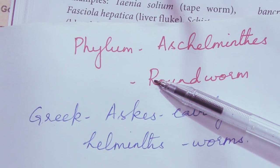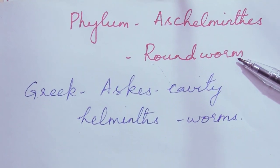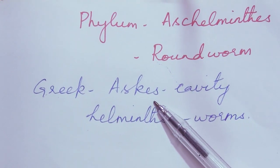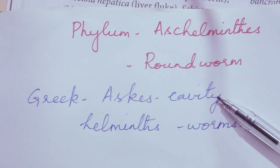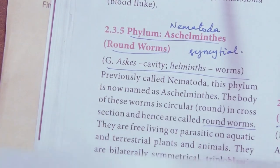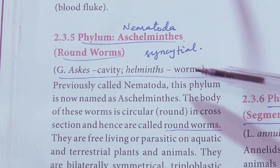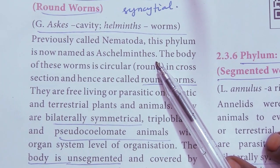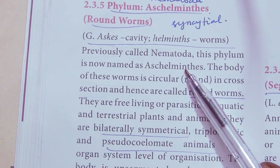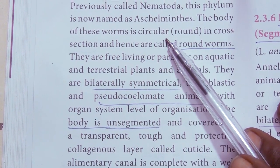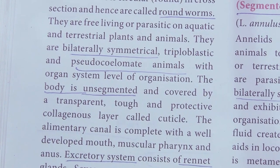Next is Phylum Aschelminthes — another Greek term. Aschelminthes are called roundworms. 'Askos' means cavity and 'helminthes' means worm. So it has a true cavity and is a roundworm. It is also called Nematoda — just as cnidarians were previously called Coelenterata, Aschelminthes were previously called Nematoda. The body of the worms is circular — round — in cross section. That is why they are called roundworms.